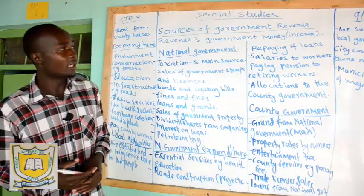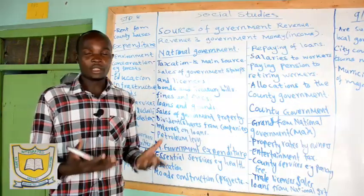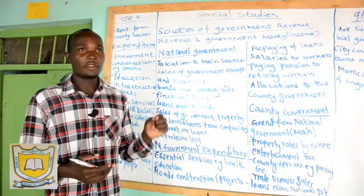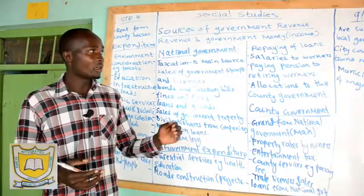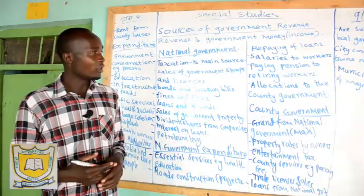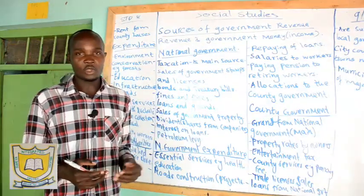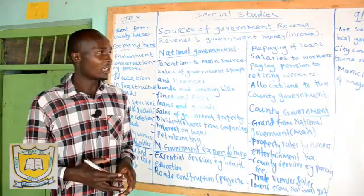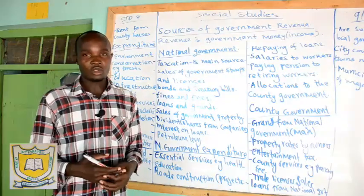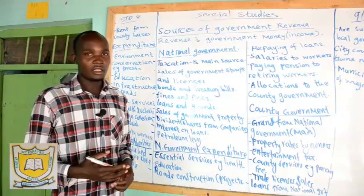We said that the judiciary is headed by the Chief Justice, who is the president of the judiciary. We also talked about the superior courts: we have the Court of Appeal, the Supreme Court, and the High Court. Then we have the subordinate courts — magistrate courts, the Kadhis' Court — and also what we call court martial and special courts like the juvenile court, which are related to children.